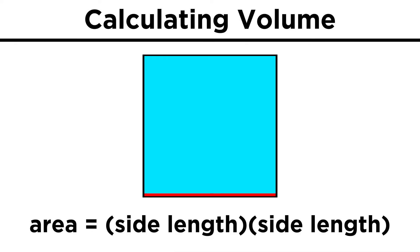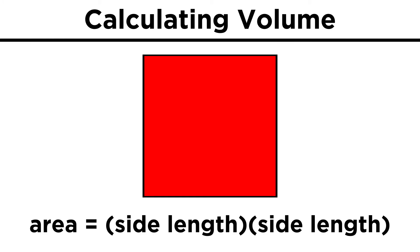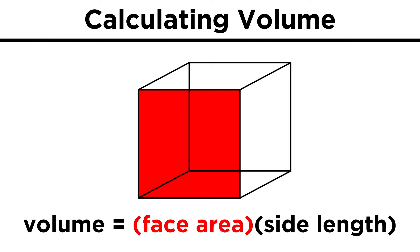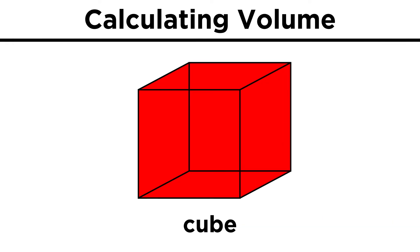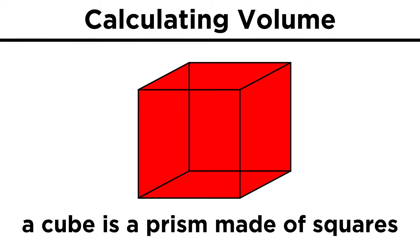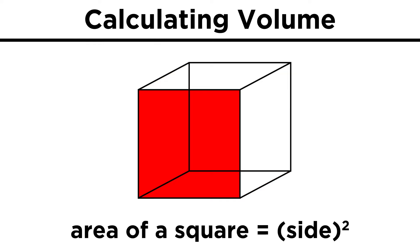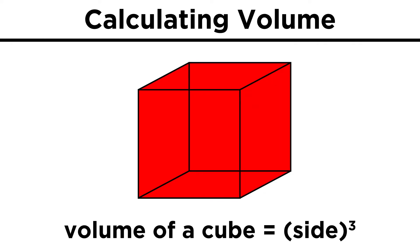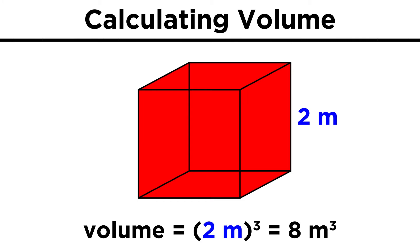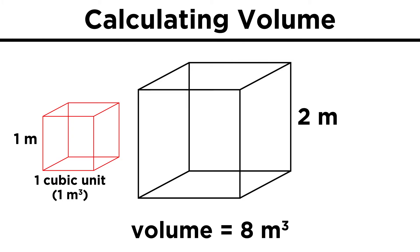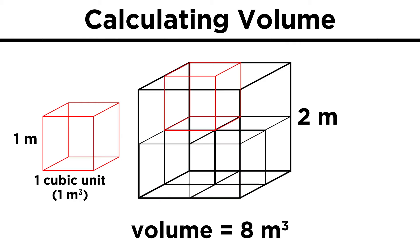Just the way the area of a square is found by running a side length across the shape, if we take that square surface and run it across a third dimension, we can get a cube. A cube is a prism with squares for all its faces. To find the volume of a cube, instead of just squaring the side length, which gives us the area of one square face, we cube the side length to get the volume. With a side length of two meters, this cube has a volume of eight cubic meters. We can visualize this by saying that if we have some one-by-one-by-one cubes, or cubic units, it will take eight of them to fill this larger cube.